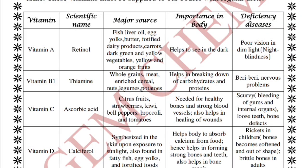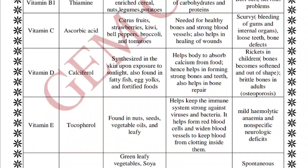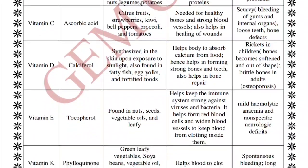Vitamin A has the scientific name retinol, and its deficiency causes night blindness. Vitamin B1 is thiamine, and its deficiency causes beriberi. Vitamin C is ascorbic acid, and its deficiency causes scurvy. Sources for each are provided in the video.